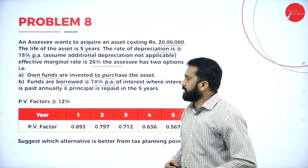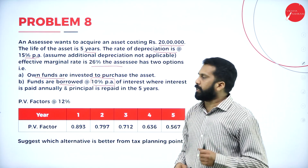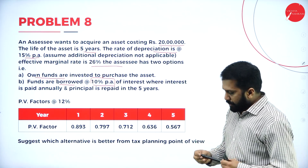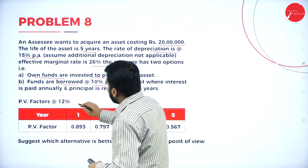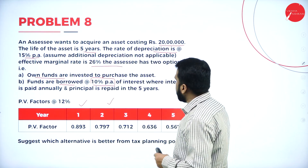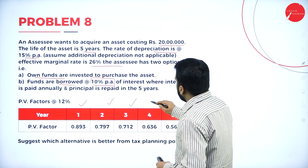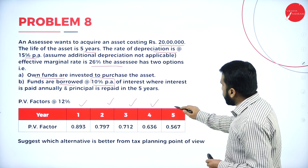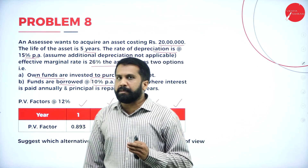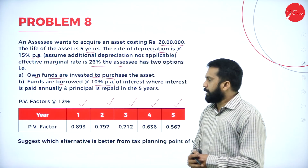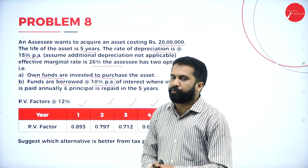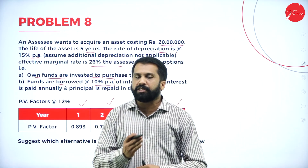Which one is better, you are supposed to suggest. These are the PV factors at 12% rate: 0.893, 0.797, 0.712, 0.636, and the last one 0.567. You have to calculate own fund, you are supposed to calculate borrowed fund, and you are supposed to tell which option is better.